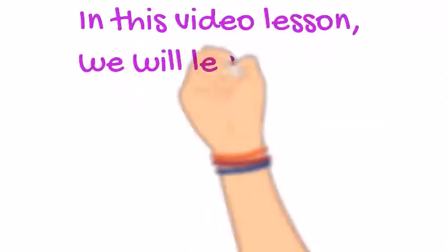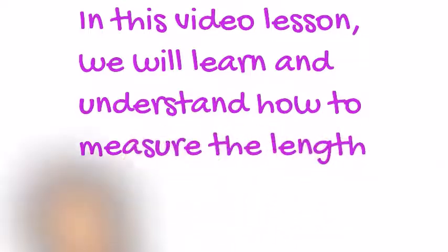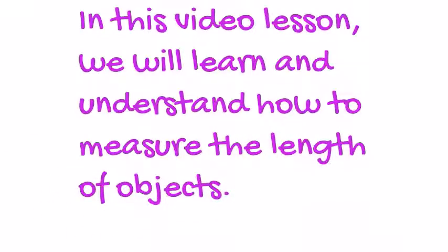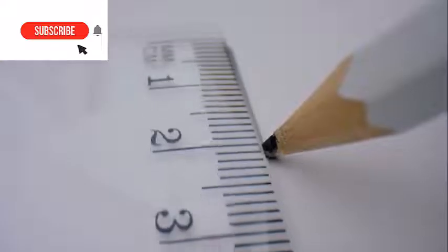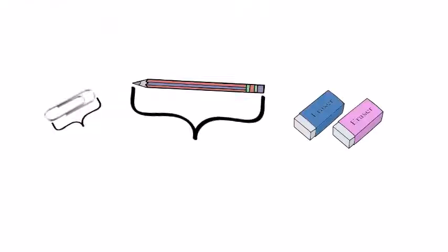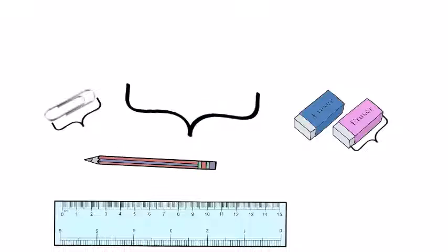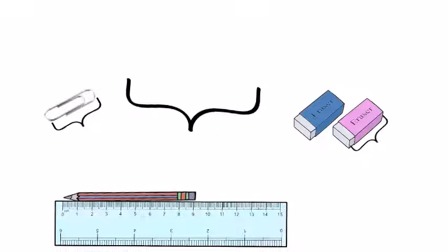In this video lesson we will learn and understand how to measure the length of objects. Let's get started. So when we are measuring the length of objects like maybe a paperclip or a pencil or even erasers, you have to consider these as the length. You're going to need a ruler to measure the length and you line up your object correctly on your ruler.